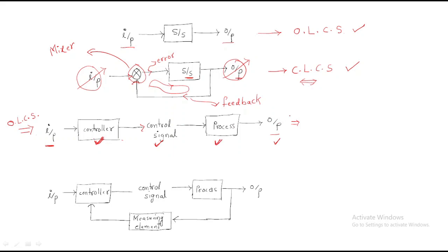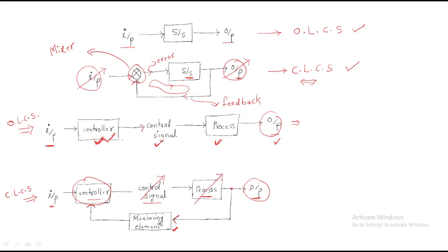In the closed loop control system, we have an input, a controller generating a control signal, and a process producing an output. This output is measured by a measuring element and fed back to the controller. There is no such connection in the open loop system. Because of this feedback, the control signal and process are automatically varied, giving us the desired output.